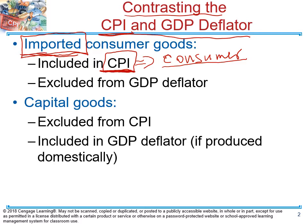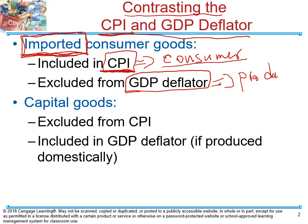So we need to include imported goods in the consumer price index. But when we calculate GDP or GDP deflator, we do not include goods produced outside of the United States, because GDP deflator is trying to reflect production on the territory of the United States. So imported goods are part of CPI, but not part of the GDP deflator.